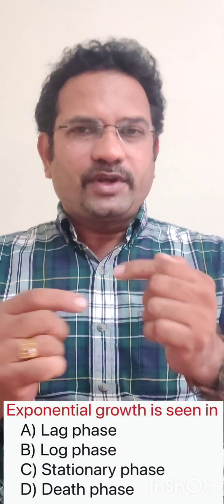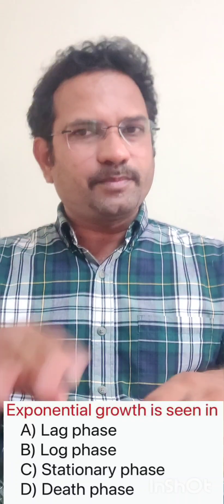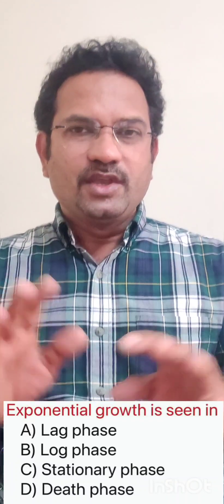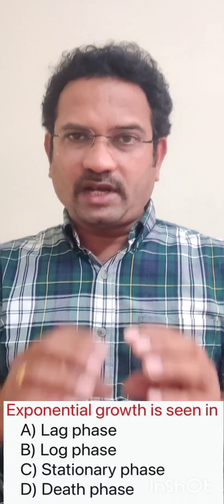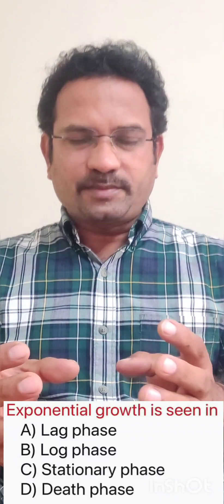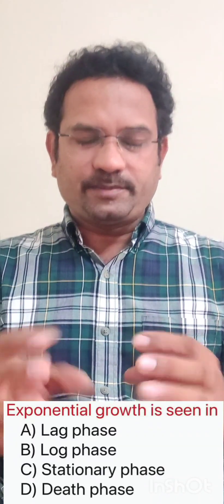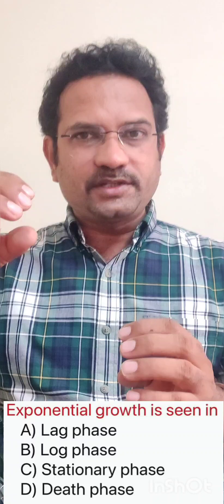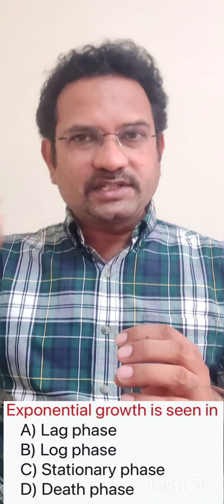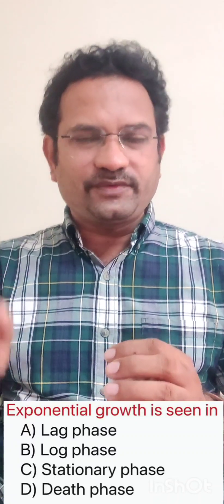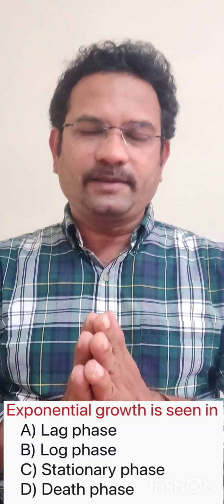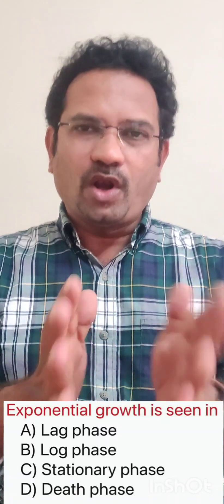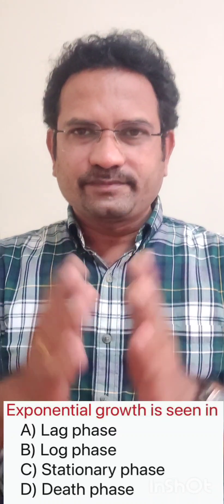After that, it goes to a plateau phase known as the stationary phase. Then when the nutrient amount is reduced, bacteria starts dying — that is called the death phase. So the four phases are: lag phase (no multiplication), log phase (exponential growth), stationary phase (no multiplication), and death phase (bacteria die). The answer is exponential growth is seen in the log phase.